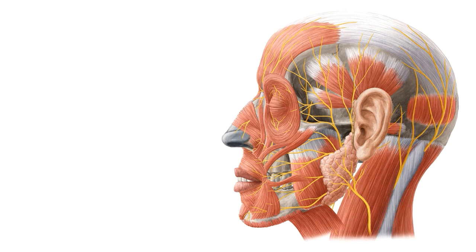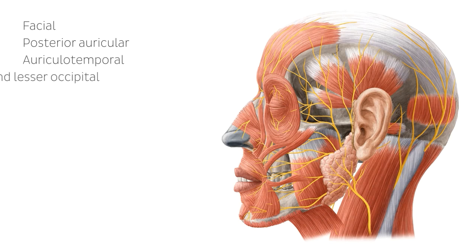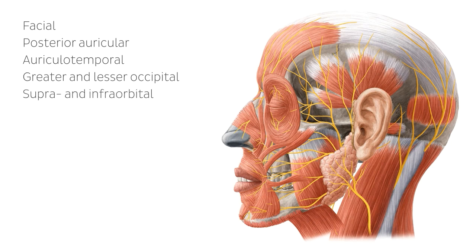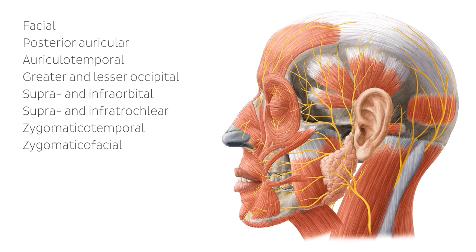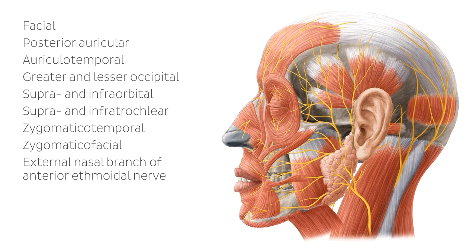Before we continue, I would like to list the different structures we're going to be talking about. The first one is the facial nerve. We're also going to talk about the posterior auricular, the auriculotemporal, the greater and lesser occipital nerves, the supraorbital and infraorbital nerves, the supratrochlear and infratrochlear nerves, zygomaticotemporal and zygomaticofacial, the external nasal branch of the anterior ethmoidal nerve, the buccal, the greater auricular, and finally the mental nerves.